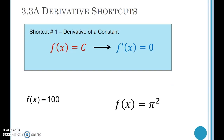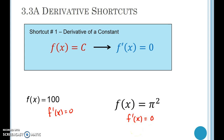Here's your very first shortcut: any time you're taking the derivative of a constant, the derivative is 0. That makes sense if you think about what the graph of a constant function looks like — it's a horizontal line. If you have y equals 12, that's a horizontal line, and the slope at any x-coordinate would be 0. For example, f(x) = 100 gives f'(x) = 0. And f(x) = π² — since π is a constant, π² is a constant, so its derivative is also 0.